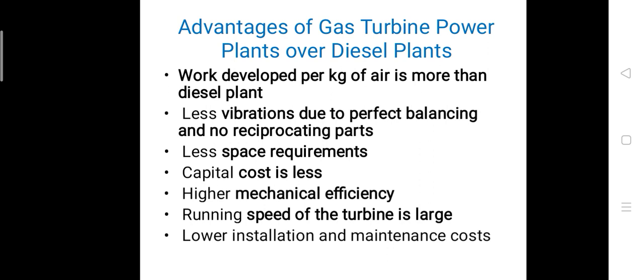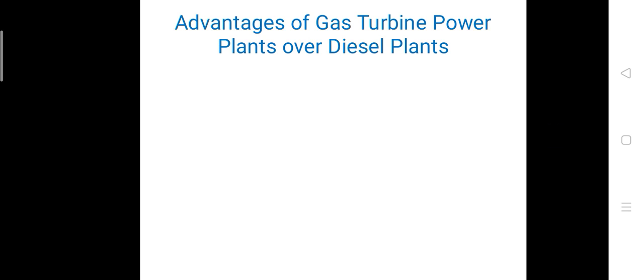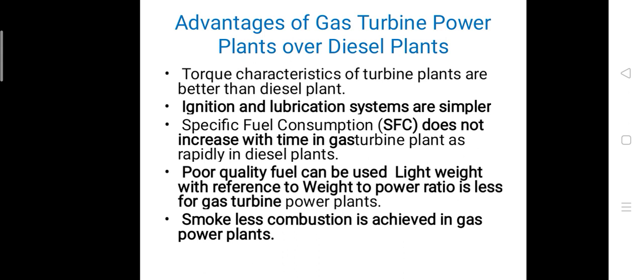The running speed of the turbine is large. Lower installation and maintenance cost. The torque characteristics of turbine blades are better than diesel plants. Ignition and lubrication systems are simple. Specific fuel consumption does not increase with time in gas turbine plants as rapidly as in diesel plants. Poor quality fuel — that is, fuel with lower calorific value — can be used. Light weight with a lower weight-to-power ratio, and smokeless combustion is achieved.